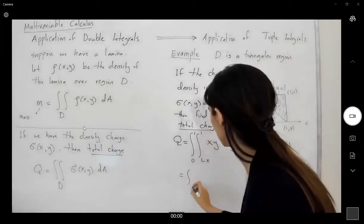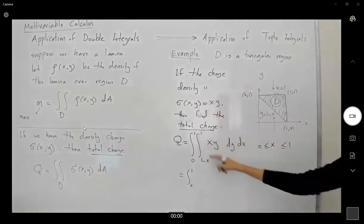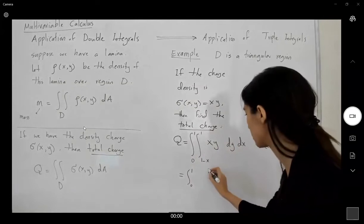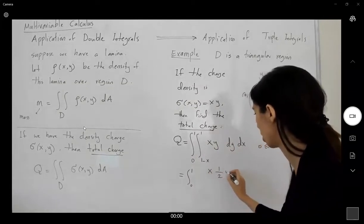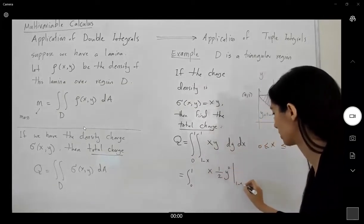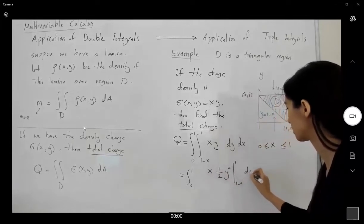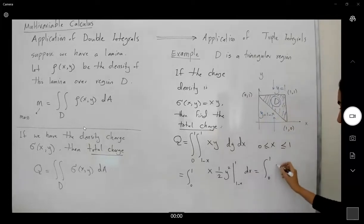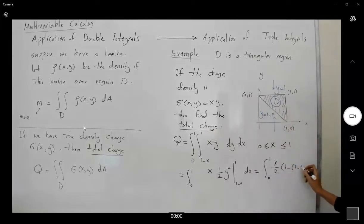This is equal to integral from 0 to 1. And if you take this integral, the inner integral with respect to y, you get x times a half times y squared, and your y ranges between 1 minus x to 1, dx.